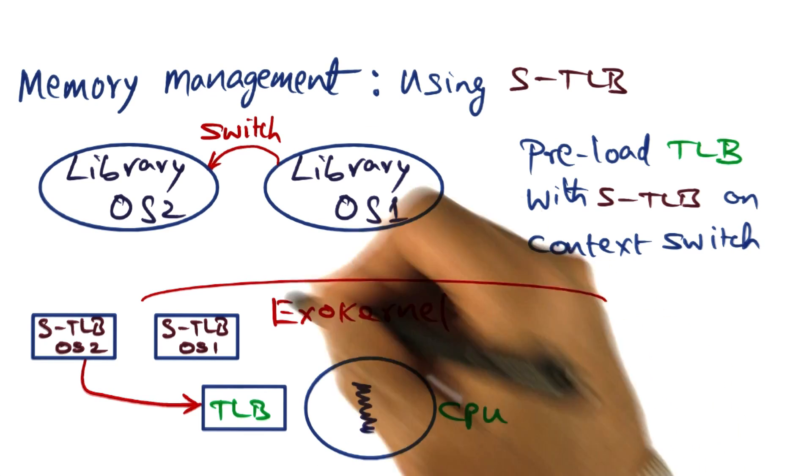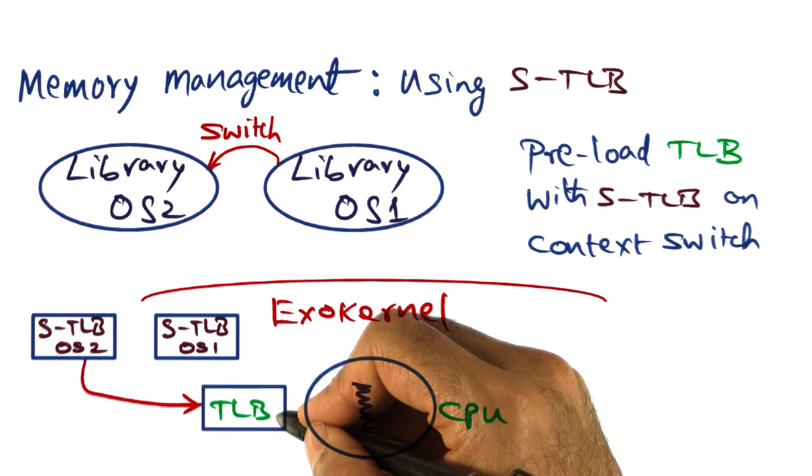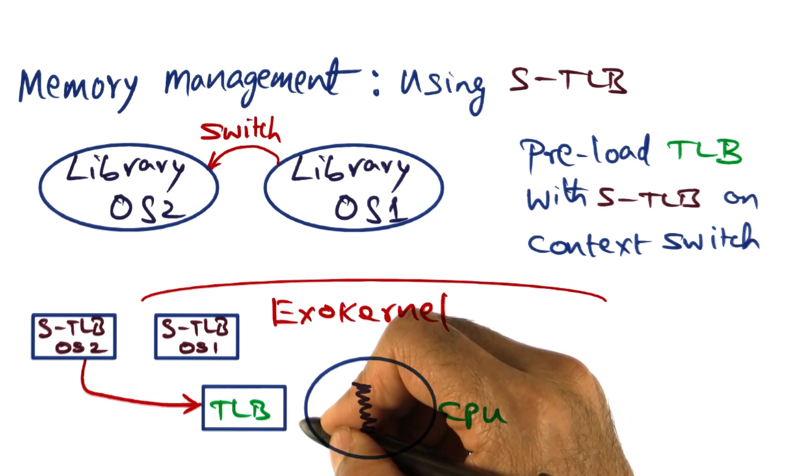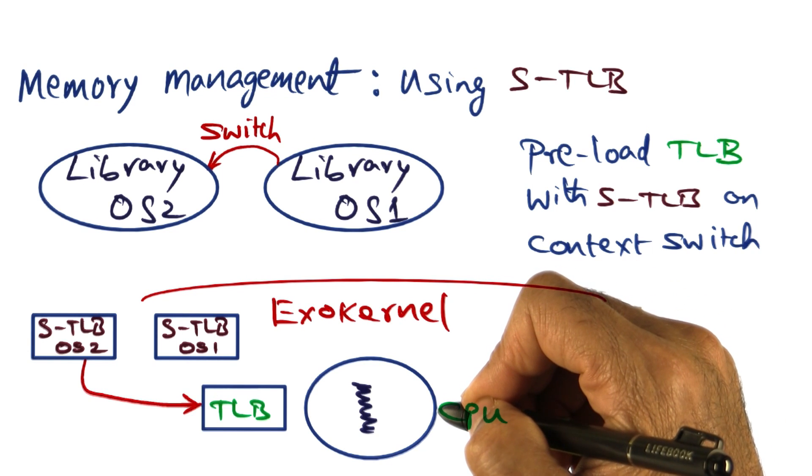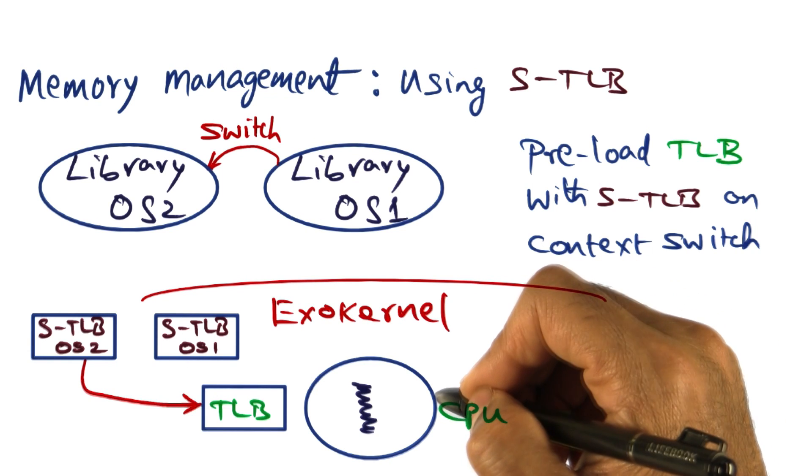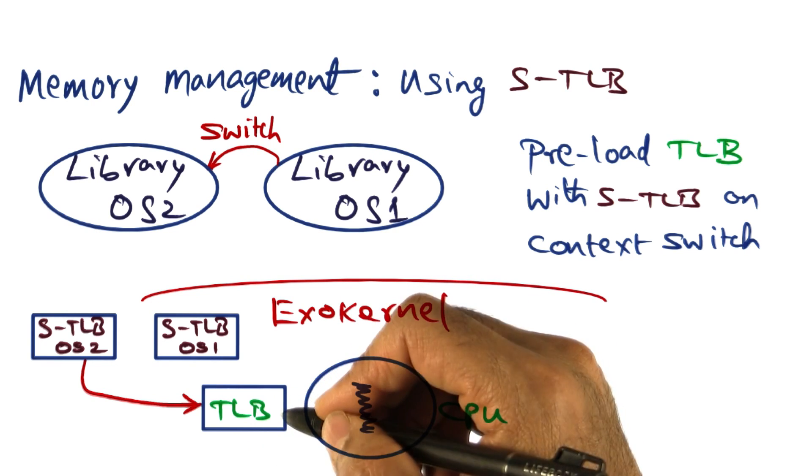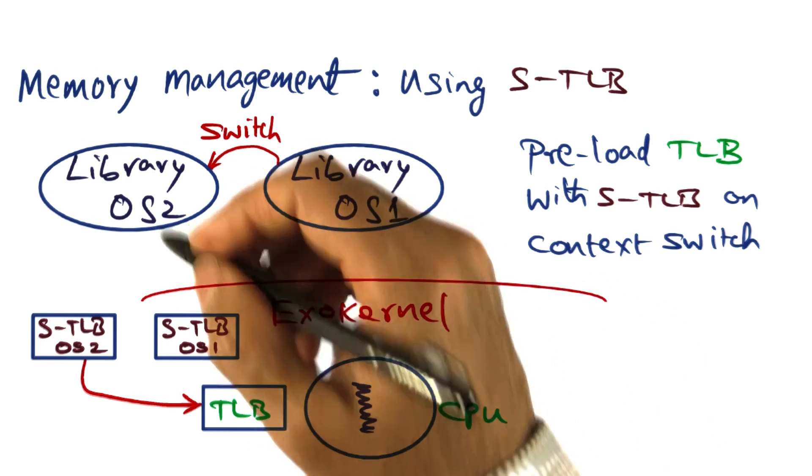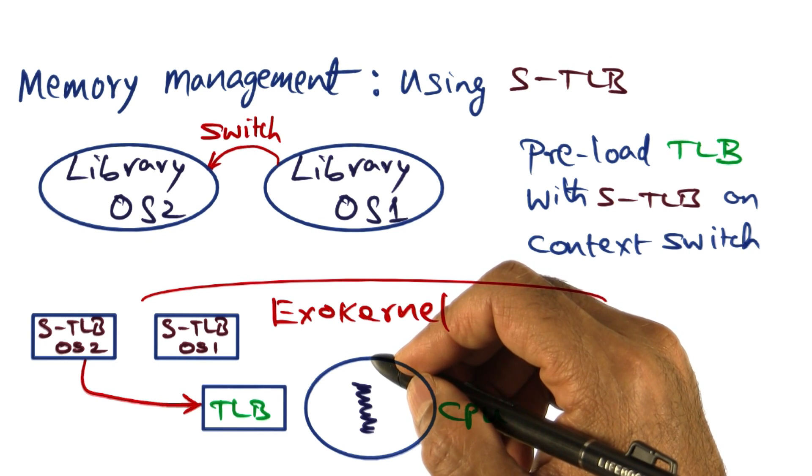Of course, when the library operating system starts running and it does not find a mapping for a virtual address in the TLB, at that point, exokernel is going to kick up that missing virtual page translation in the TLB as a page fault up into the library operating system. And it will get resolved exactly as we detailed earlier.